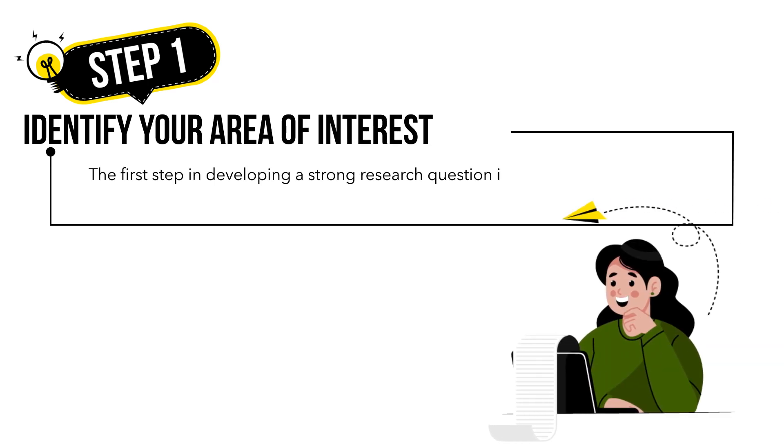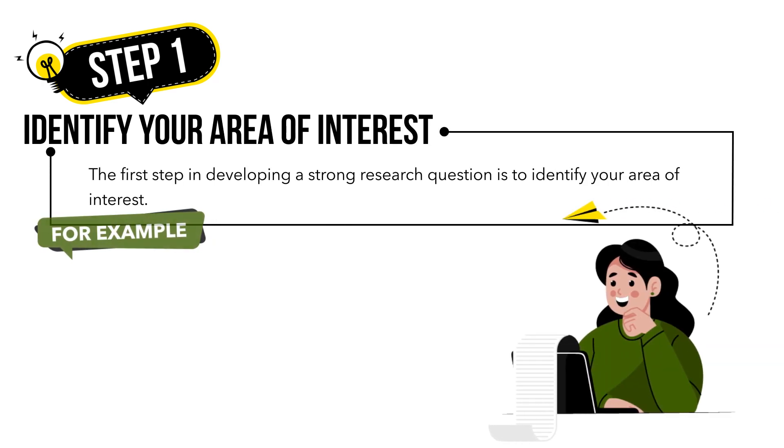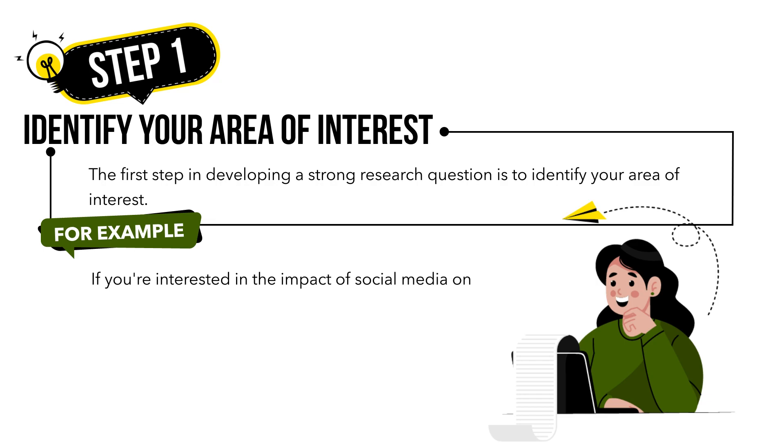The first step in developing a strong research question is to identify your area of interest. For example, if you're interested in the impact of social media on mental health, this would be your area of interest.